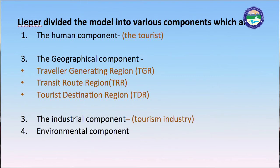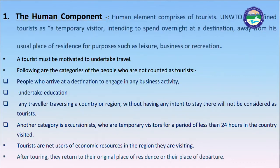The organization of these five elements operates within a broader environment — physical, cultural, social, economical, political, and technological — with which it interacts. Leiper divided the model into various components: the human component, which includes the tourist; the geographical component, which includes the three sub-regions: Traveler Generating Region (TGR), Transit Route Region (TRR), and Tourist Destination Region (TDR); and the industrial component.